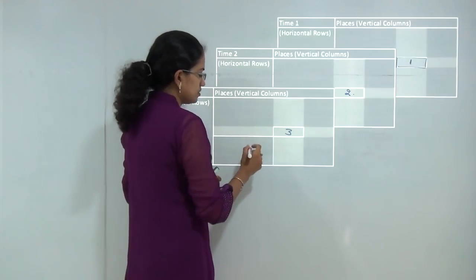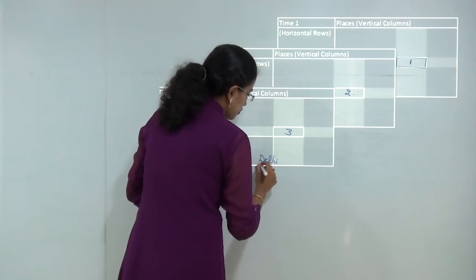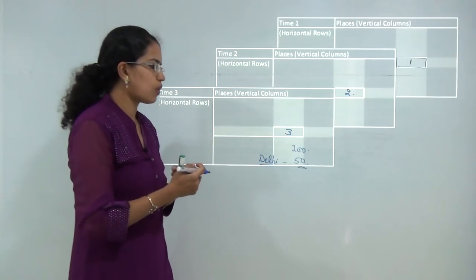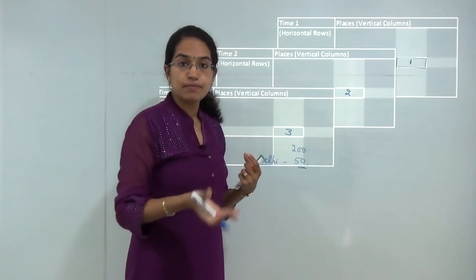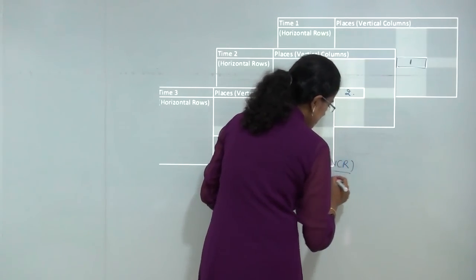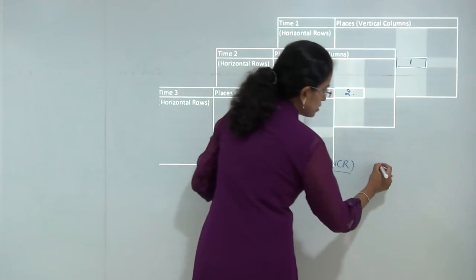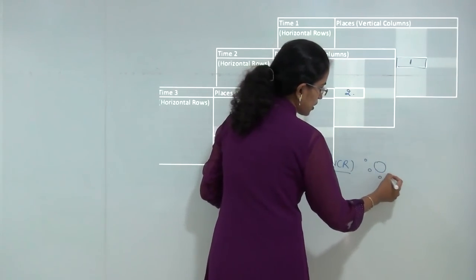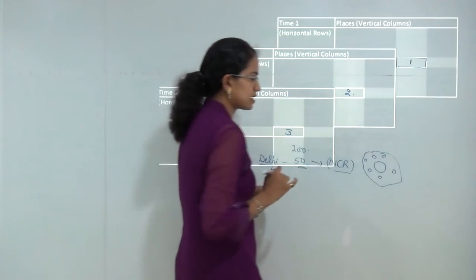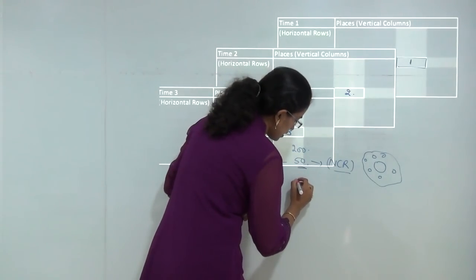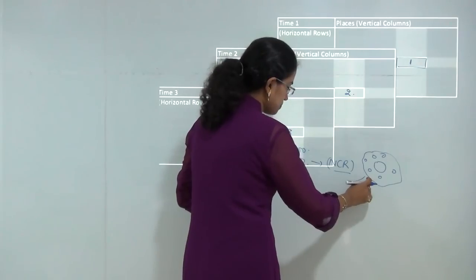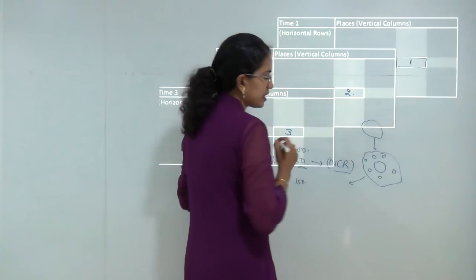Take the city of New Delhi - 200 years back, New Delhi was just a city which was kind of developing independently. 50 years back it developed into an NCR or national capital region, where surrounding areas like Ghaziabad, Noida, and Faridabad came closer to the main city and suburbs developed out. In the next 150 years, this expansion can grow further or there can be a reduction. This is how places change over a time frame.